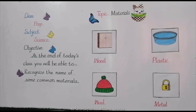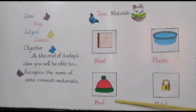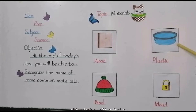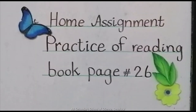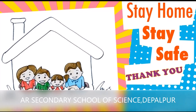We use different materials in daily life — for example wood, plastic, wool, metal. Is this made of metal? No, it is made of plastic. This is your home assignment: practice of reading book, page number 26. Take care and Allah Hafiz.